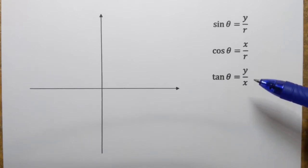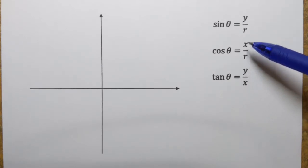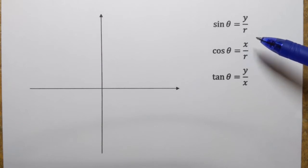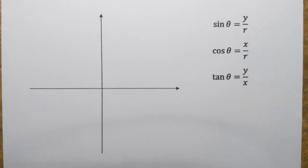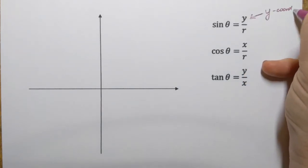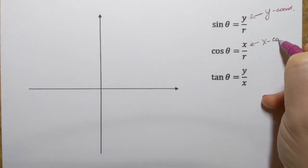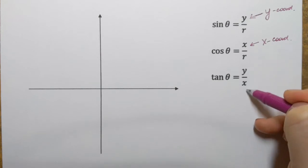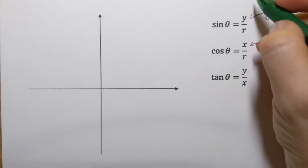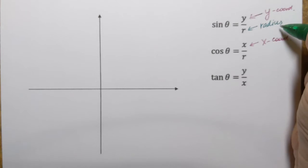To help us analyze all that we're going to use the following definitions of trigonometric functions. These definitions involve coordinates of a point that lies on the terminal side of an angle. The coordinates are x and y — y represents the y-coordinate, x represents the x-coordinate, and r is the radius of a circle centered at the origin that also contains that point.